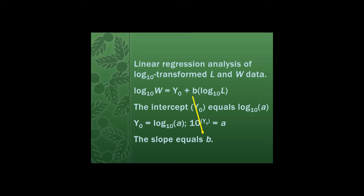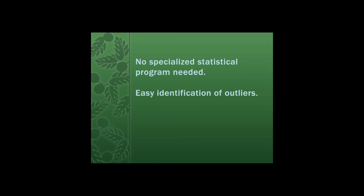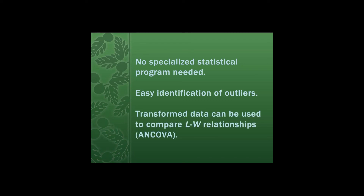If you're used to using statistical programs or graphics packages you might be thinking: why do we go through this whole complicated process? I could have just done some non-linear regression analysis and come out with the results right away. It turns out that there are several advantages to log-transforming your data and using the linear regression approach. First, you don't need a specialized statistical program — for instance, if you use Excel you just have to load the data analysis tool pack. Second, this method helps with easy identification of outliers or pinpointing data points that may be bad. Third, these log-transformed data are already in a format that can be used in analysis of covariance to compare length-weight relationships — for instance, to determine whether there is a difference between male and female growth.